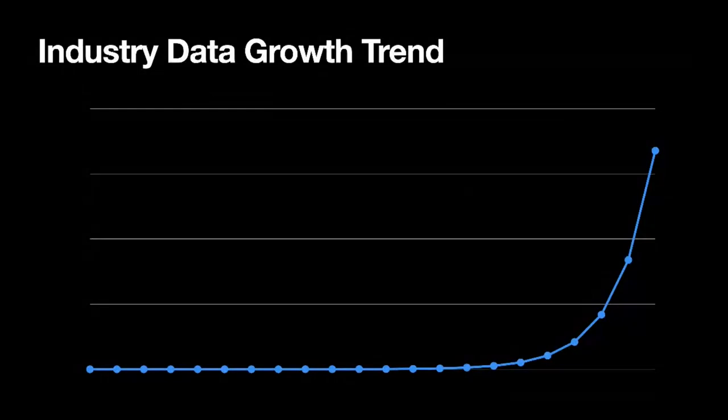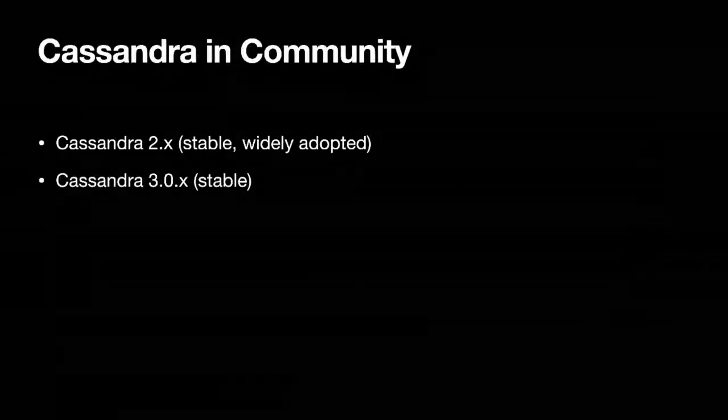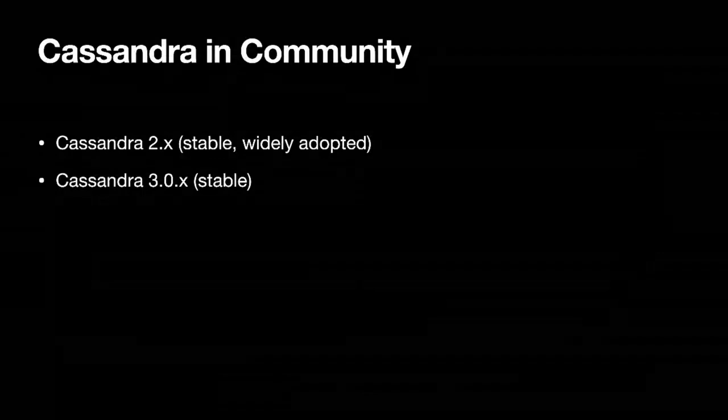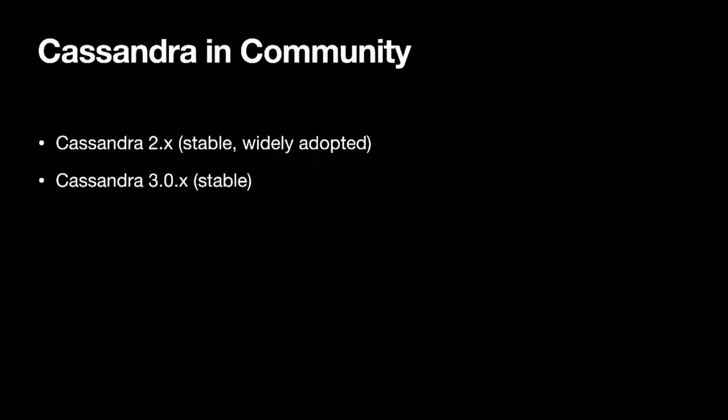Cassandra is not immune to any of these industry trends. Currently, Cassandra has various releases in production use. We have the 2.x series, which is stable and widely adopted. Then there is the 3.0 series, also stable and adopted in the industry. We have Cassandra 3.11, which is also stable and has some performance improvements over 3.0. And 4.0 is the next unreleased version that the Cassandra community is working on.